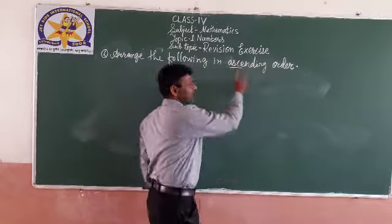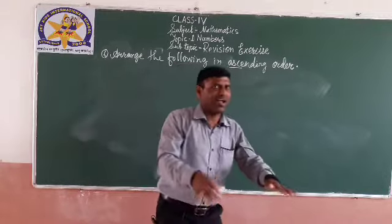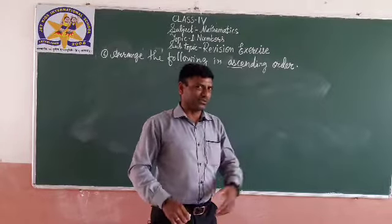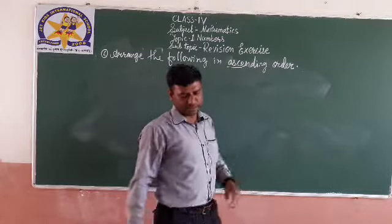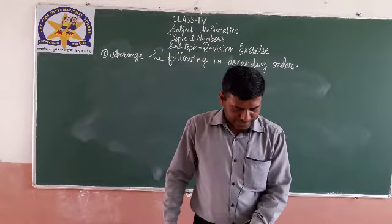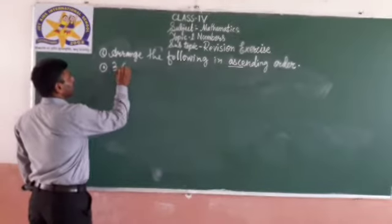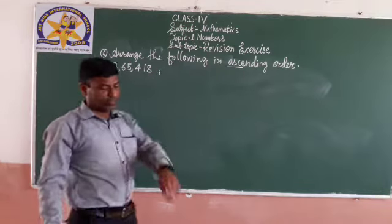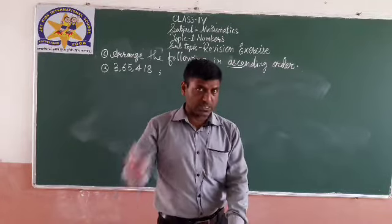Ascending means smaller to bigger. Descending — D stands for dhakka. If you give a push, he will fall down, so bigger to smaller is descending. Ascending means smaller to bigger. See, put commas in the numbers — there may be no commas in the book, but you should put commas first. This is compulsory.